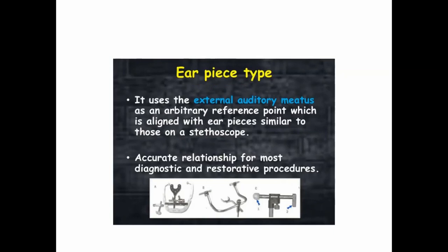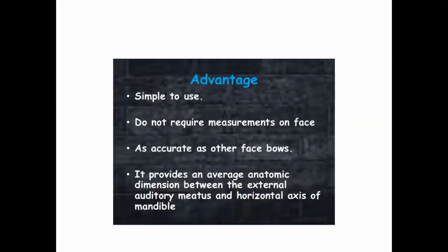Then comes the earpiece type of facebow. It uses the external auditory meatus as an arbitrary reference point, which is aligned with the earpieces similar to those of a stethoscope. Here, the external auditory meatus is taken as the arbitrary posterior reference point, and the earpieces are arranged like a stethoscope onto this reference point. It gives accurate relationship of the cast to the hinge axis on most diagnostic and restorative procedures. The main advantage is that it is very simple to use, does not require measurements on the face, and does not move with movement of the skin.